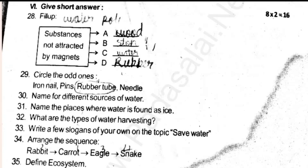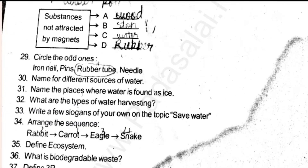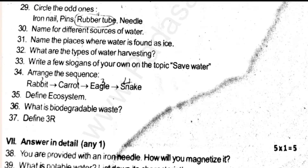Arrange the sequence — this is very simple. The food chain is: carrot, rabbit, snake, and eagle. The first thing is carrot, then rabbit, then snake and eagle. Define ecosystem — this is very simple. The next thing is 5 marks.